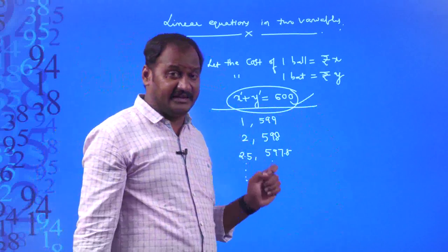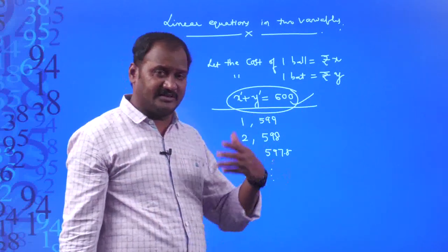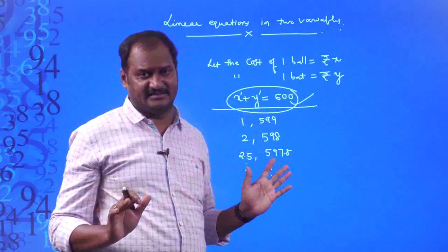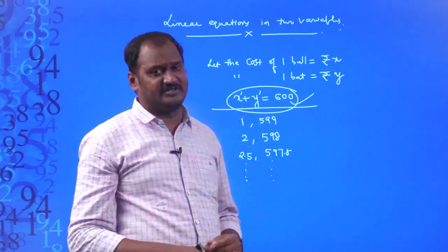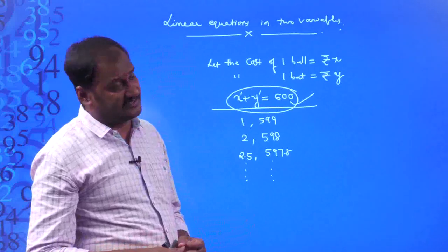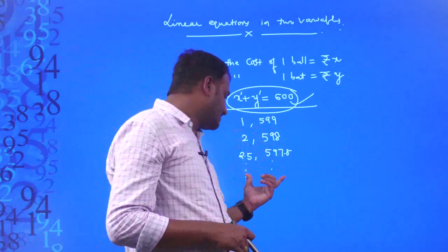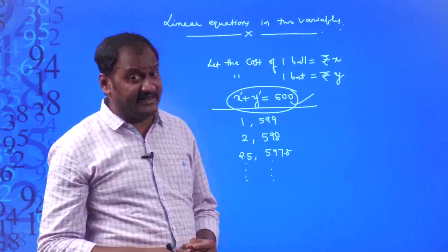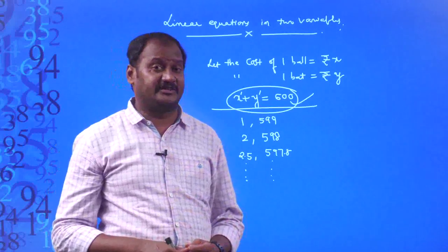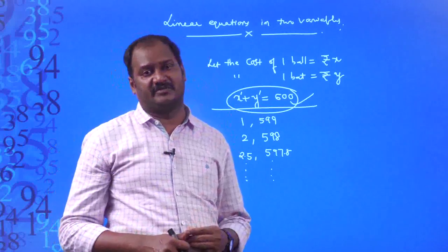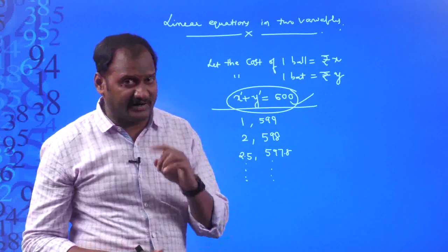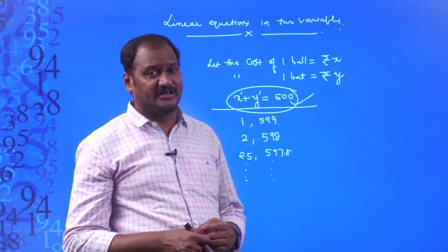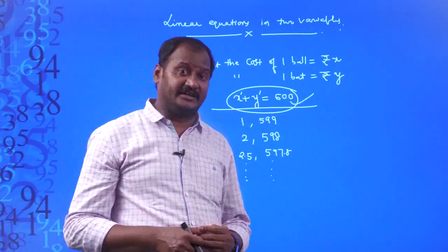A linear equation in two variables has infinitely many solutions, whereas a linear equation in one variable has only one unique solution. Let us now understand the standard form of a linear equation in one variable as well as in two variables.